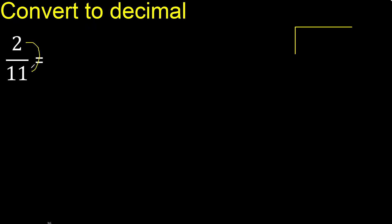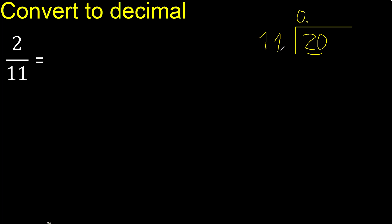2 divided by 11. 2 is less, therefore complete — always complete with 0. So 0 point. 20 is not less. 11 multiplied by which number is nearest to 20 but not greater? 11 multiplied by 2 is 22, which is greater. Multiplied by 1: 11 multiplied by 1 is 11, which is not greater. 20 minus 11 is 9.